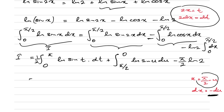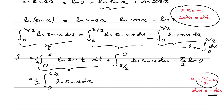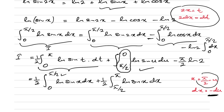We know that a definite integral is independent of the variable name, so instead of t we can use x. We break the limit of the first integral: integral from 0 to π of ln(sin x) dx splits into integral from 0 to π/2 of ln(sin x) dx plus integral from π/2 to π of ln(sin x) dx.